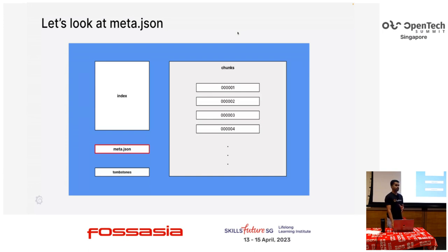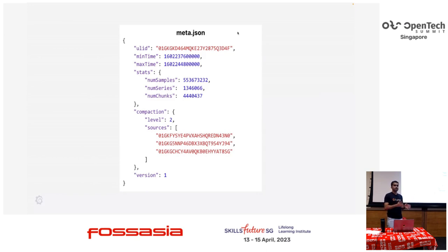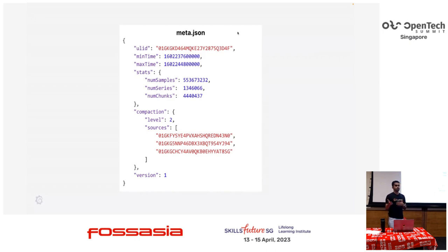Starting with the meta file — every block has an identifier called a universal identifier. The block stores data from a particular min time to a particular max time, so if you look at the meta, you know what time range the block is covering. It has helpful information like how many series, how many chunks. And if the block was created from other blocks, you also store the parent blocks for debugging purposes.